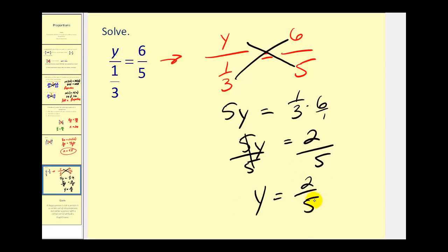Let's go ahead and check this one. We already determined that 1/3 times 6 was equal to 2. So if y is equal to 2/5, 2/5 times 5, or 5 over 1, would also give us 2. So it checks.